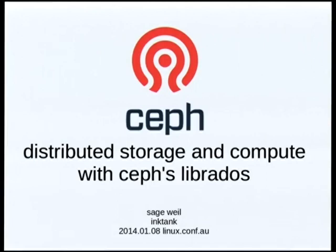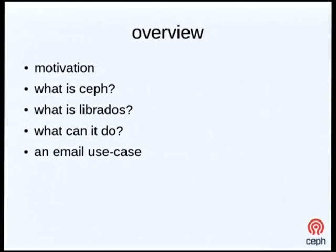I'm going to begin by setting the stage and motivating things by giving a sob story about someone trying to scale out a really simple web application and dealing with the storage part of that. I'll very briefly talk about what Ceph is, some basic features of the architecture, and then shift to looking at librados specifically — the interface used to talk directly to the internal object storage layer — all the various things it can do, and finish up with an email use case that demonstrates how you might build an application designed specifically to use that storage backend.